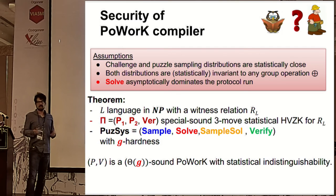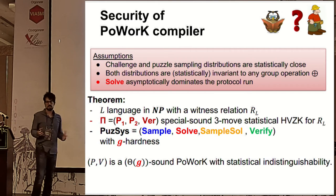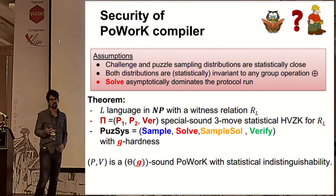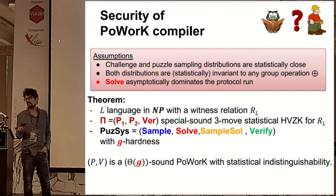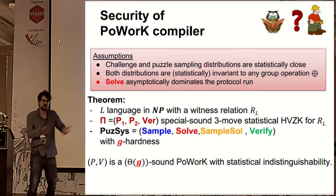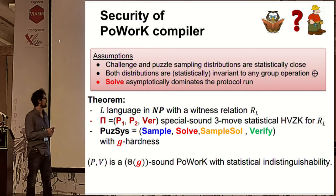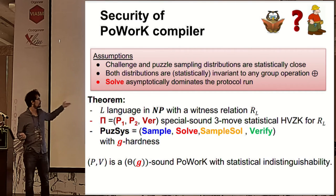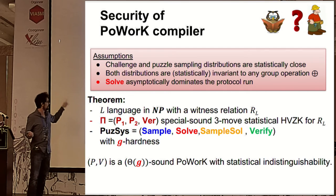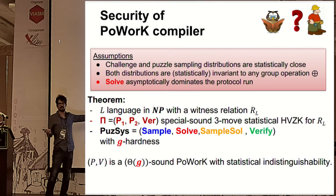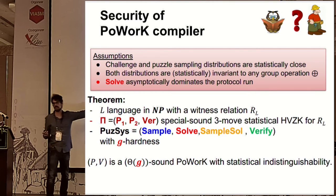Under reasonable assumptions — specifically that the challenge and puzzle sampling distributions are close (achievable when the distribution is close to uniform) and that the Solver is the slowest algorithm involved — we get that for this language, the underlying protocol, and the fixed puzzle system: if the puzzle is g-hard, we obtain a PoWoK with g-soundness and statistical indistinguishability.